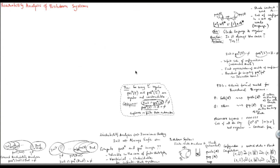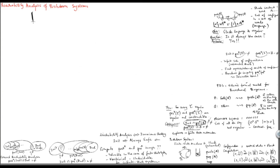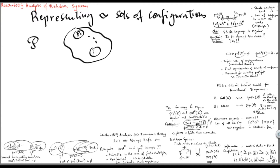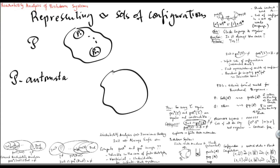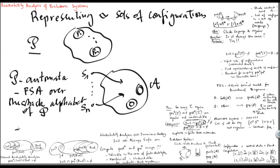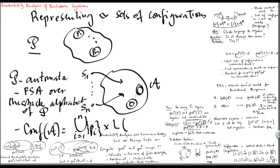Let's see concretely how these sets can be constructed. First, we need to define the representations for infinite sets of configurations of pushdown systems. Consider a pushdown system P with control states P1 to Pn. We associate with this pushdown system finite state automata called P-automata. Such an automaton A will have an initial state for every control state of the original pushdown system P. This is a standard finite state automaton over the stack alphabet of P, representing the set of configurations — for every control state Pi, the language recognized from initial state i.